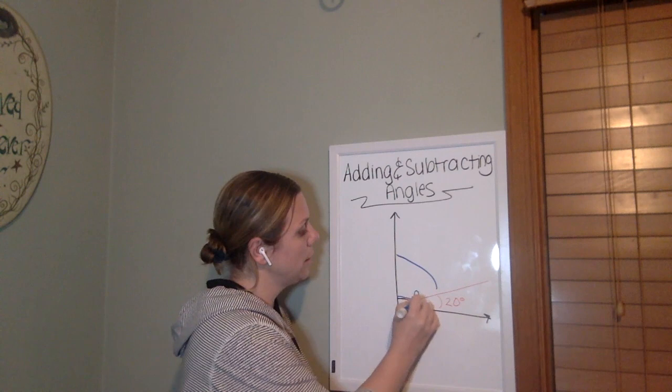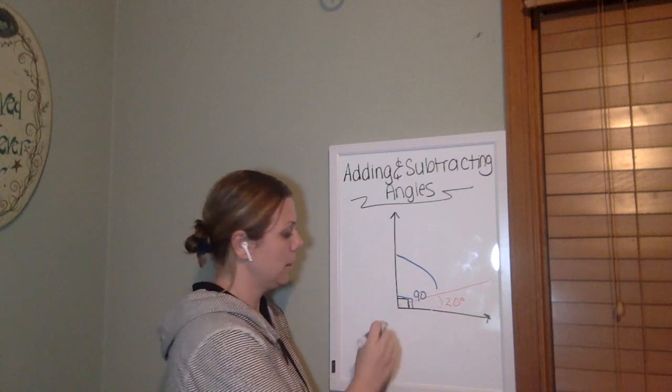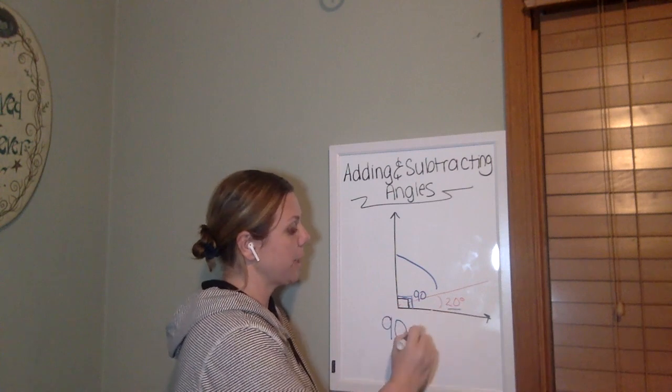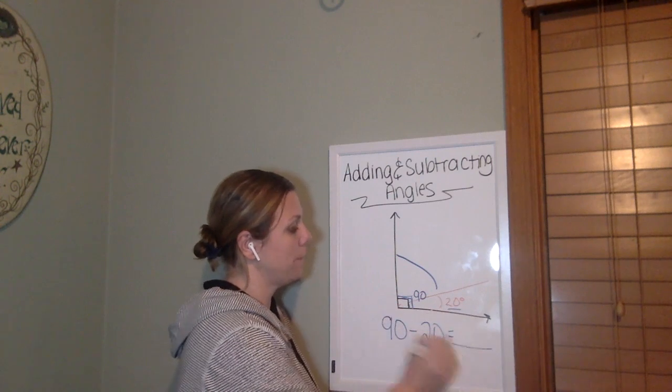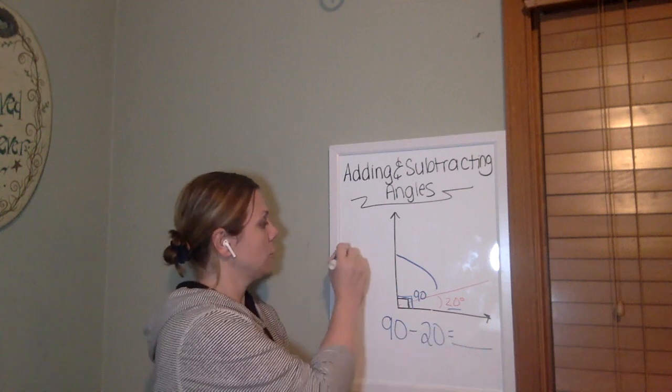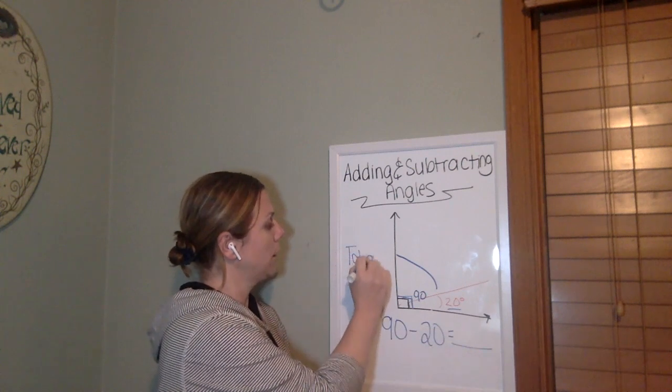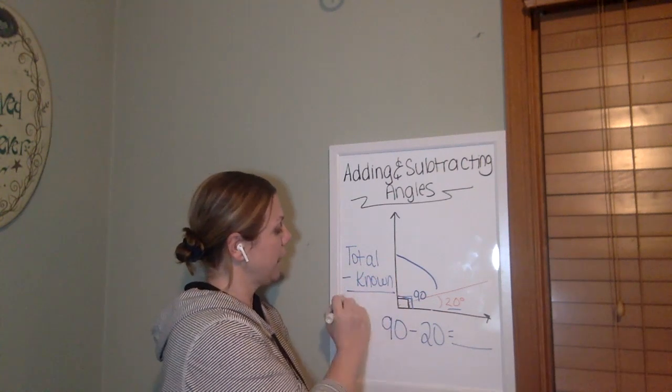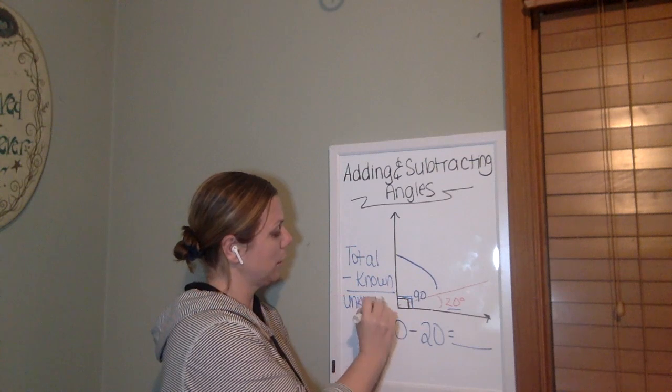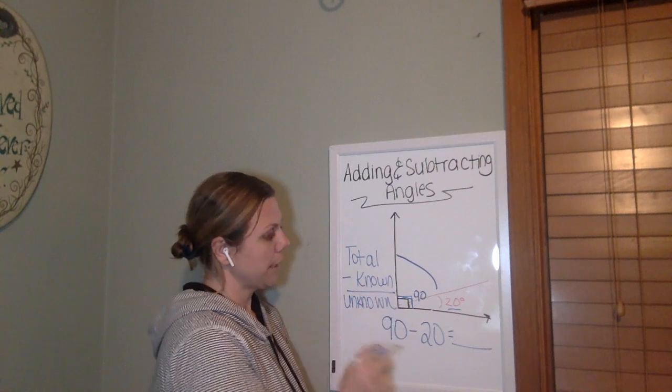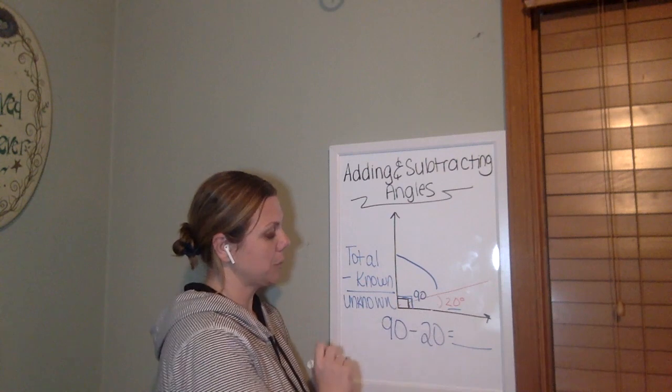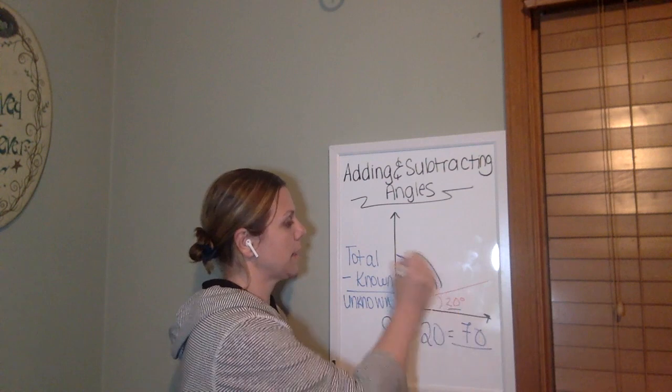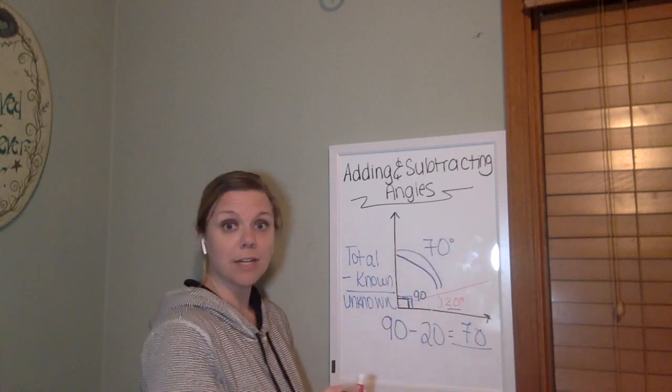My total is 90. Then my subtraction could be my total minus my known would equal my unknown. So my total minus my known is going to give me my unknown. So here I am, 90 minus 20 is 70. So that would tell me that this part of the angle right here is 70 degrees.